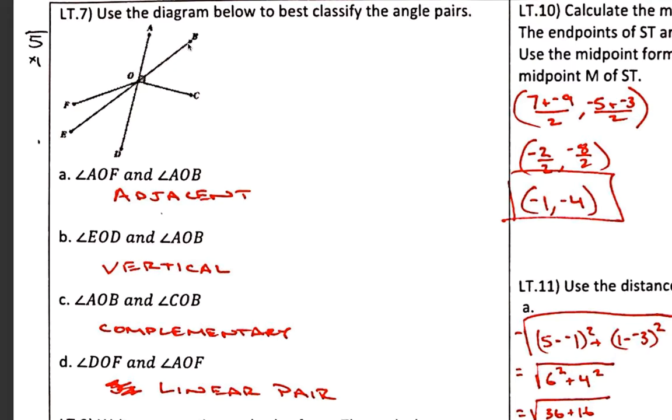AOB is this one up here, and COB is this one down here. Now remember, you can't assume that an angle is 90 degrees unless you have this little symbol here, which we do, and so we can know for sure that these two angles add up to 90 degrees, which makes them complementary.